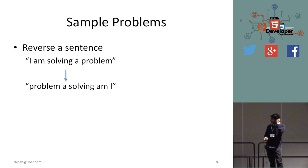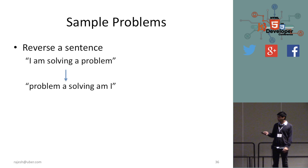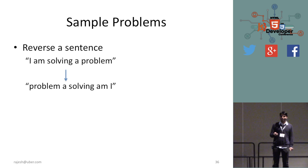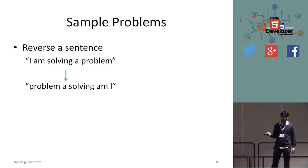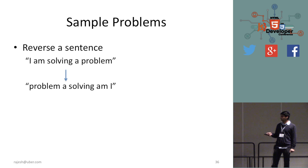Problem 3: Reverse a sentence — for example, 'I am solving a problem' becomes 'problem a solving am I'. One solution is to create an array and use array.reverse(). Another approach is to use a stack — since it's last-in, first-out, you push words onto the stack and then pop them off to get them in reverse order.